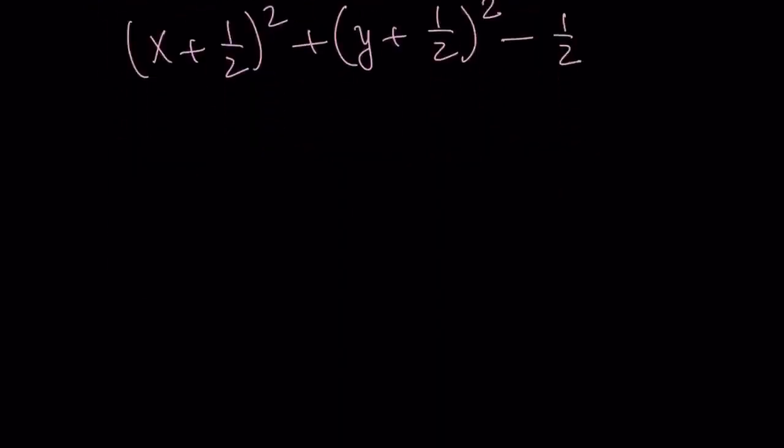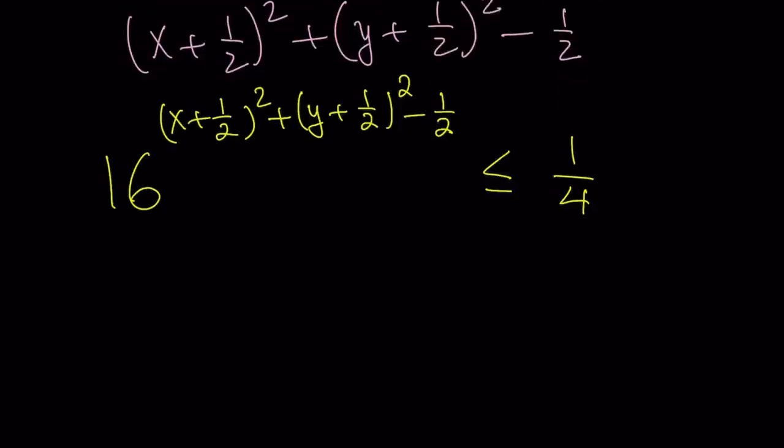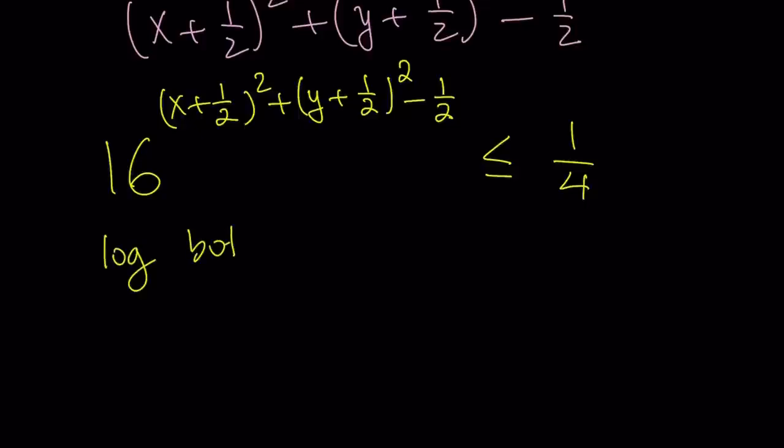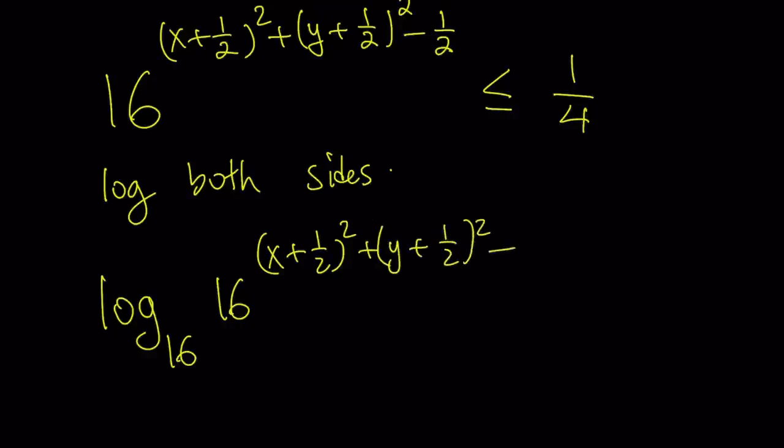But let's go ahead and substitute that here. Let's go ahead and substitute it into our expression. So we get something like this. That's 16 to the power x plus 1 half squared plus y plus 1 half squared minus 1 half is less than or equal to 1 fourth. We're almost there. Now, what can I do with this, right? Well, I can now log both sides with base 16. Let's go ahead and log both sides. Log both sides and use base 16. And that is going to give you the following. Log of base 16, 16 to the power x plus 1 half squared plus y plus 1 half squared minus 1 half is less than or equal to log base 16, and that is going to be 1 fourth.